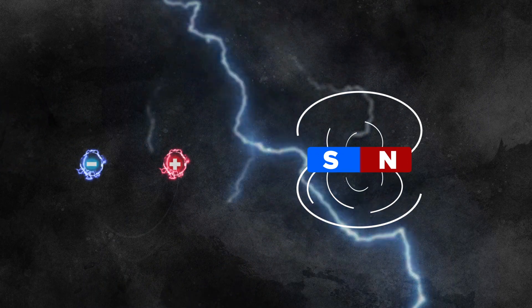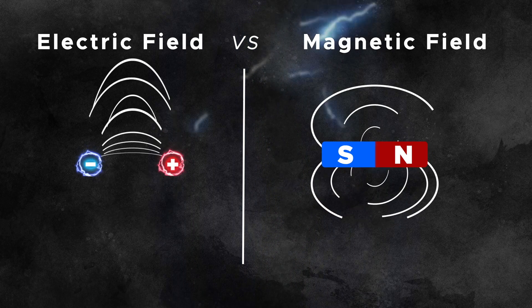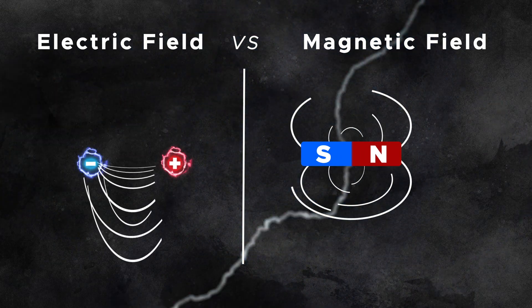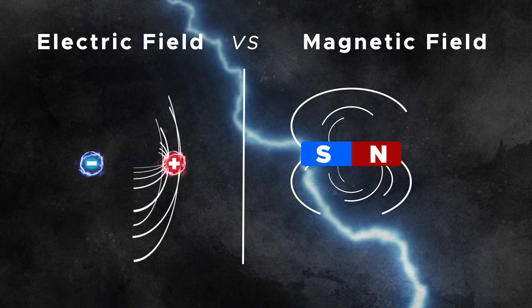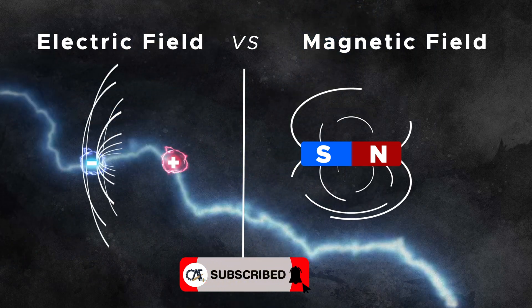Besides voltage, current, and resistance, there are two more elements that are very important to know when it comes to the basics of electricity. They are called the electric field and the magnetic field. We will cover these two fundamentals in detail in Part B of this video. So please make sure to subscribe to our channel to be notified of it.